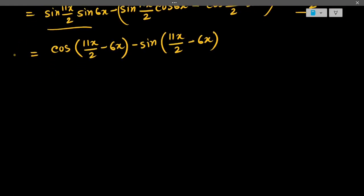After simplifying, this will be cos(-x/2) - sin(-x/2). So cos(-x/2) is cos(x/2), sin(-x/2) is -sin(x/2), and this minus is already there. So minus minus will be plus, and it will be plus sin(x/2). Now we got a simplified result.